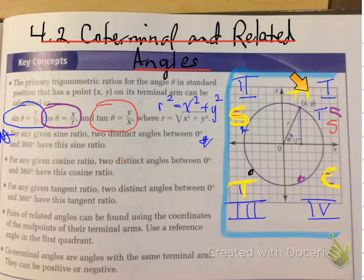A in quadrant one, S in quadrant two, T in quadrant three, and C in quadrant four. This is the CAST rule.